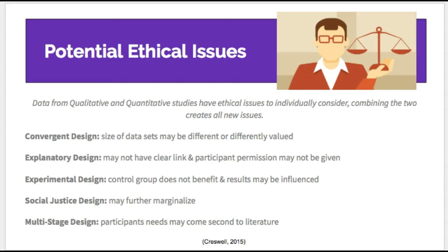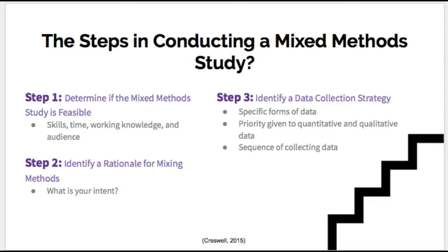Let us move on now to discussing the steps taken in a mixed method study. Step 1 is to determine if the mixed method study is even feasible. This type of study requires the skills in gathering both sets of data, the time to collect such extensive information, and a working knowledge of the different types of designs. Finally, it is important to consider the audience — will they appreciate the intricacies of your study?